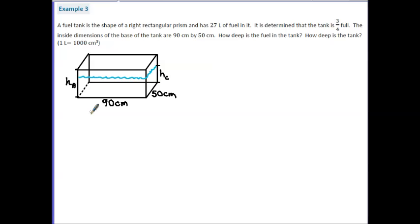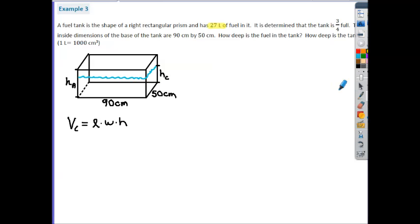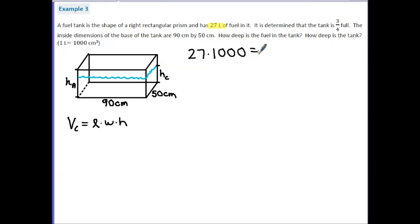I have the volume but I'm missing the current height. I can use the formula for volume, plug in everything I know, and solve for what I don't. The current volume V sub C equals length times width times height. Since there are 27 liters and 1 liter equals 1,000 centimeters cubed, 27 liters equals 27,000 centimeters cubed. So I plug in: 27,000 equals 90 times 50 times H sub C.